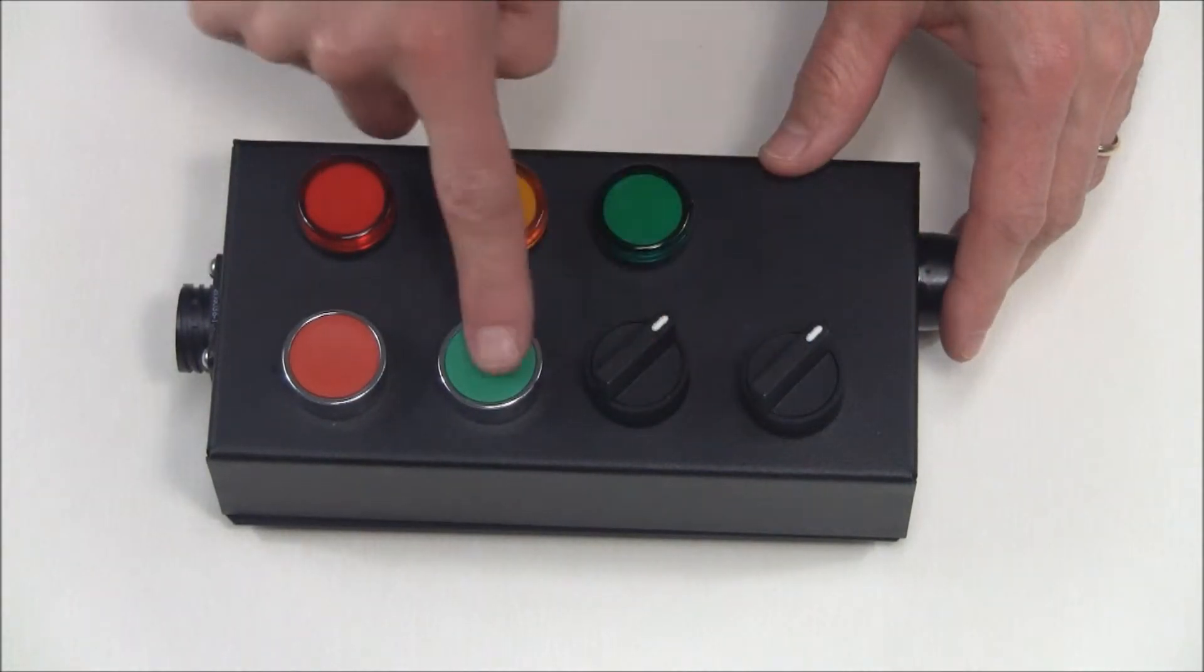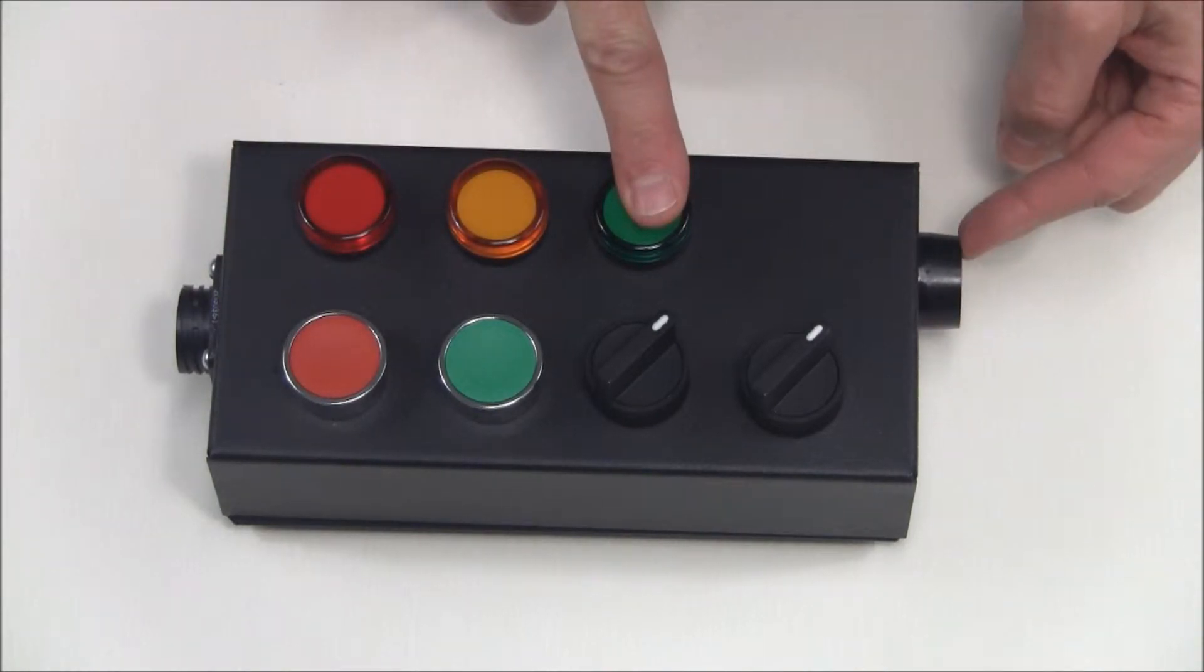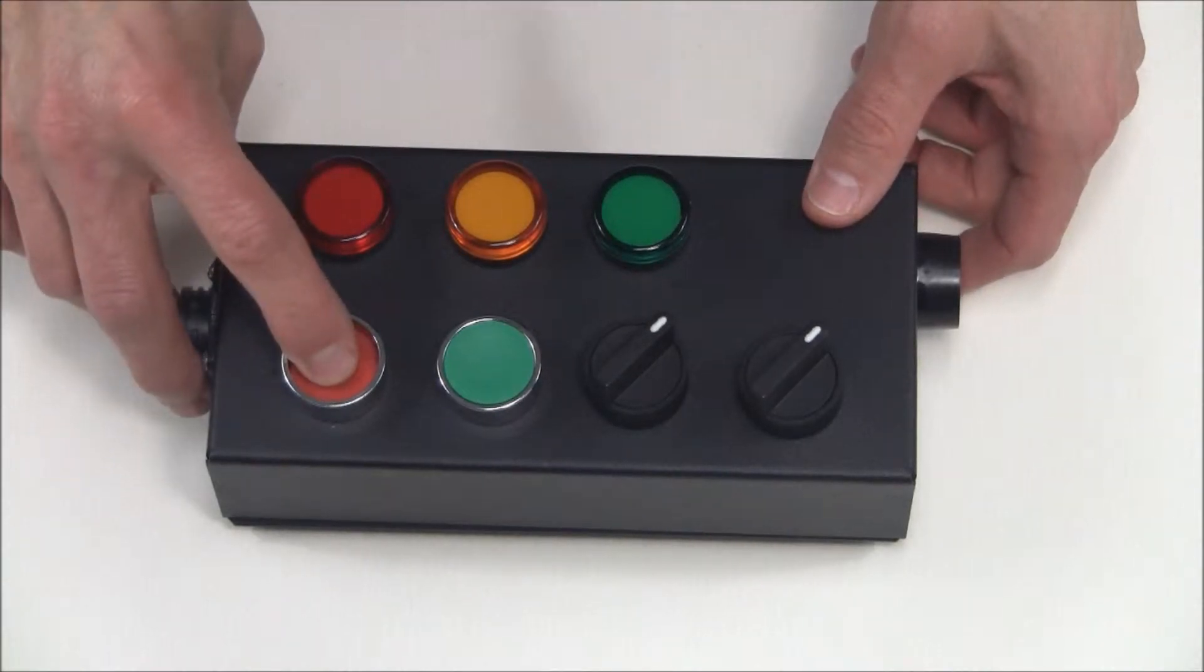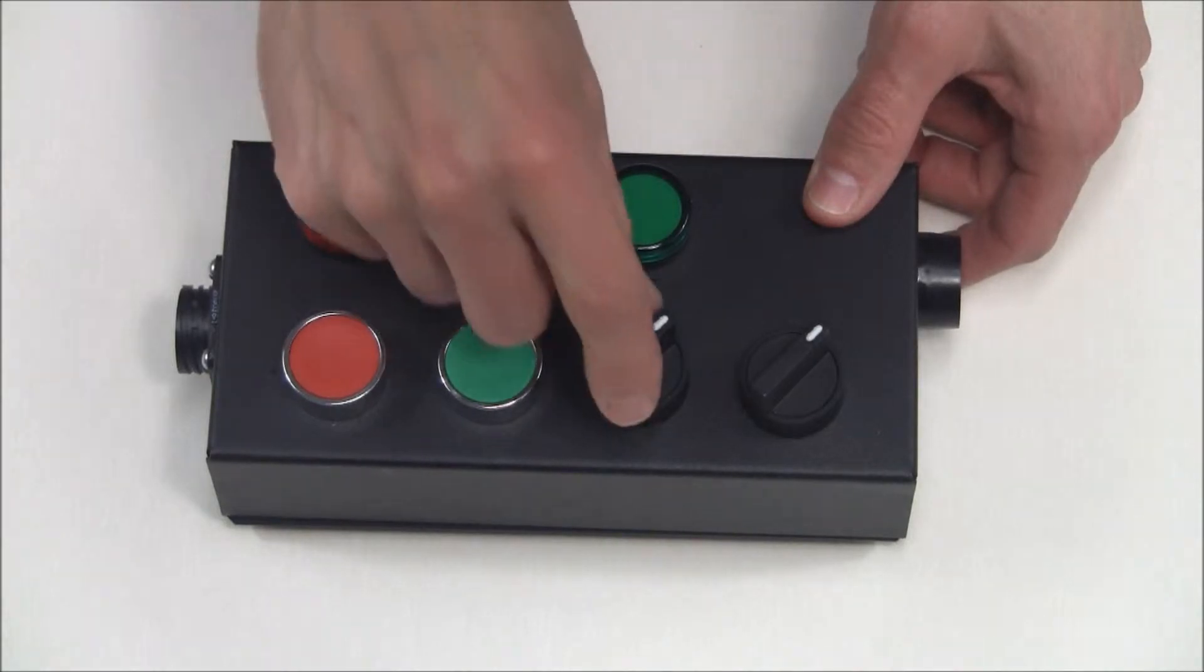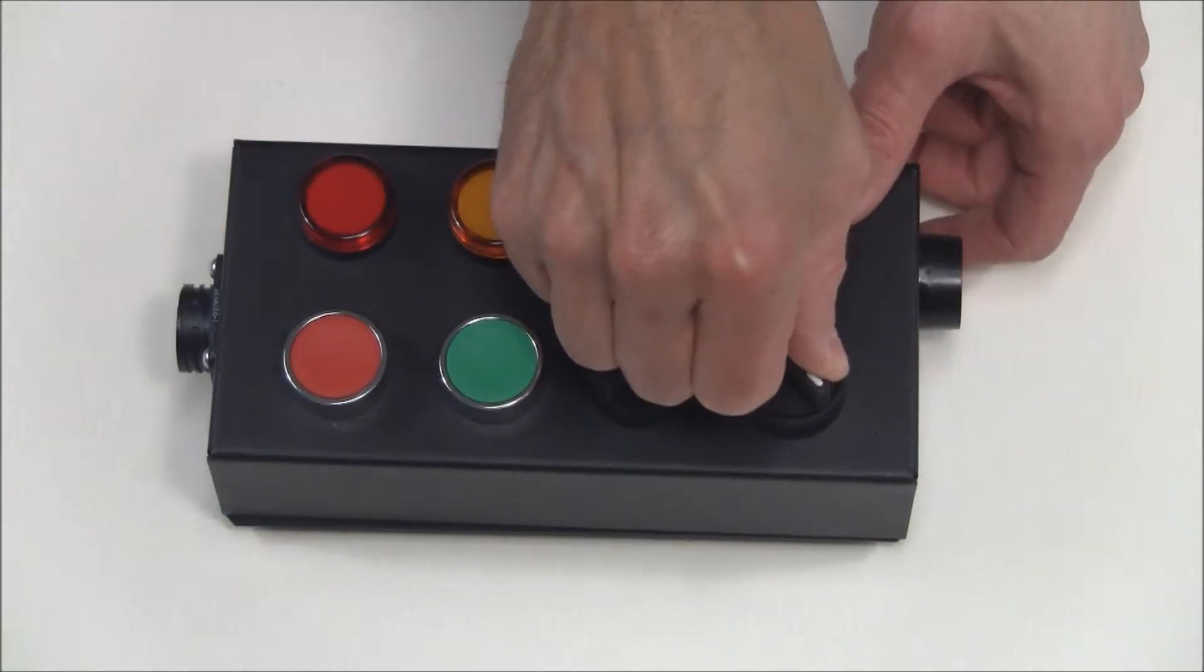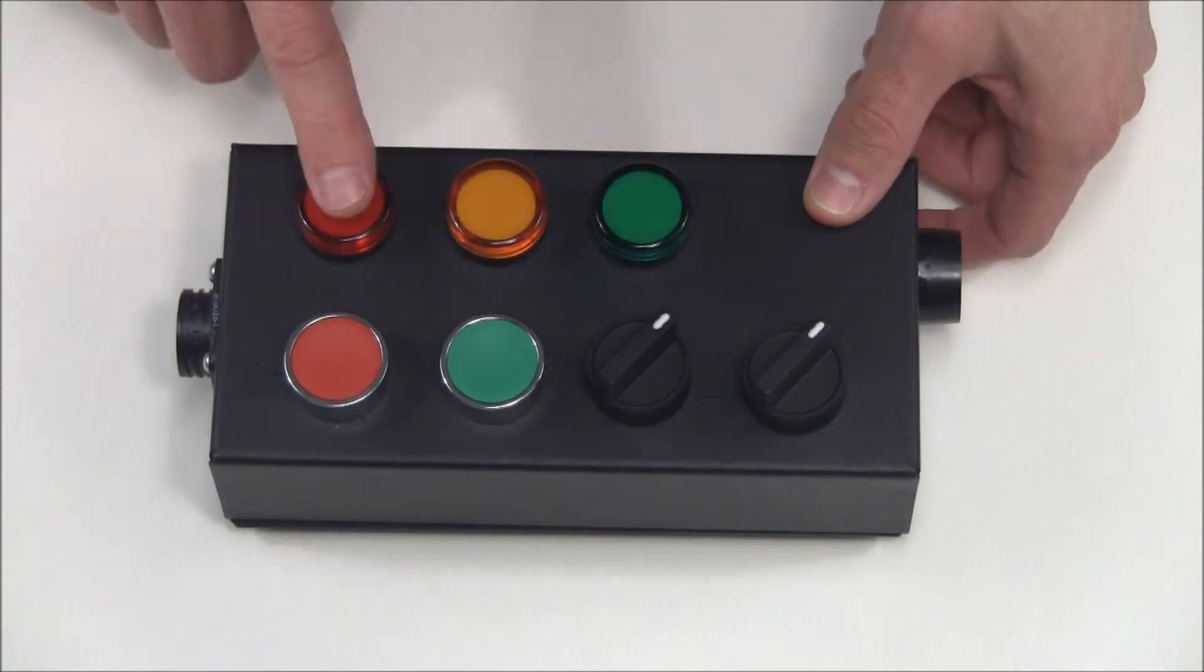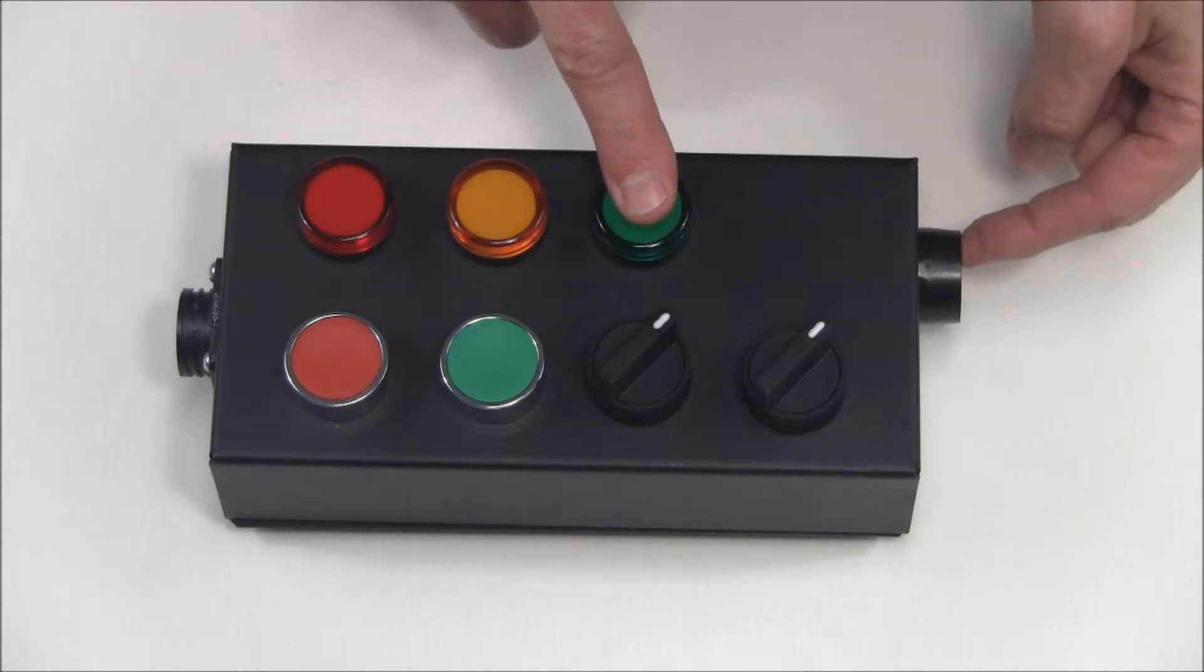It contains four inputs and it has four outputs including my piezo buzzer right here. So the inputs, I have a red pushbutton, a green pushbutton, a two position switch, and a momentary two position switch. My outputs consist of a red light, yellow light, green light, and the piezo buzzer.